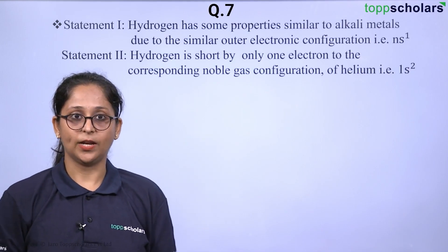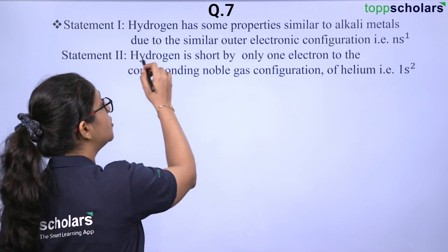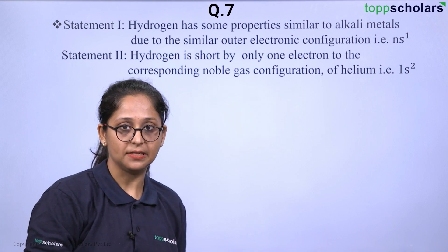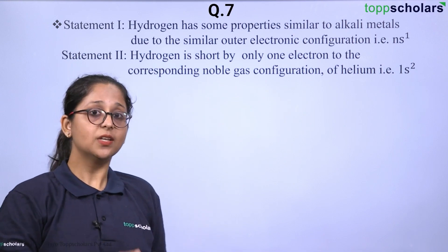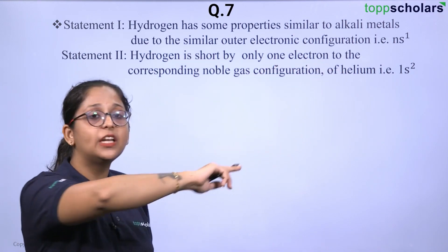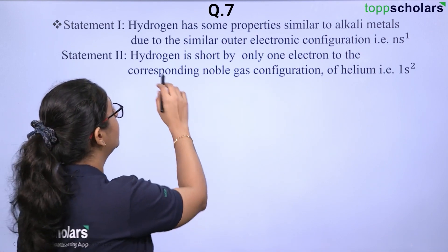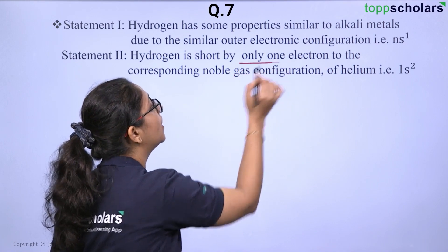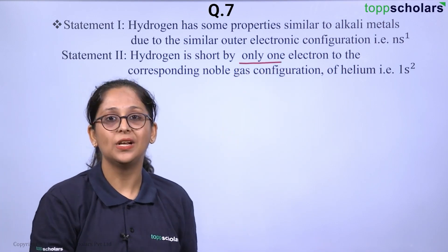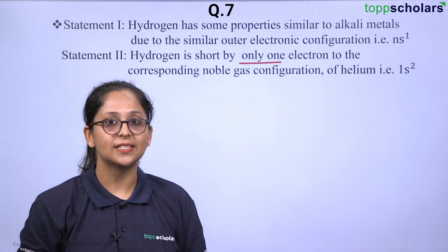In this question we have two statements. The first statement is that hydrogen has some properties which are similar to the alkali metals because it has a similar outer electronic configuration, that is NS¹. The second statement says that hydrogen is short by only one electron to the corresponding noble gas configuration of helium, that is 1S².